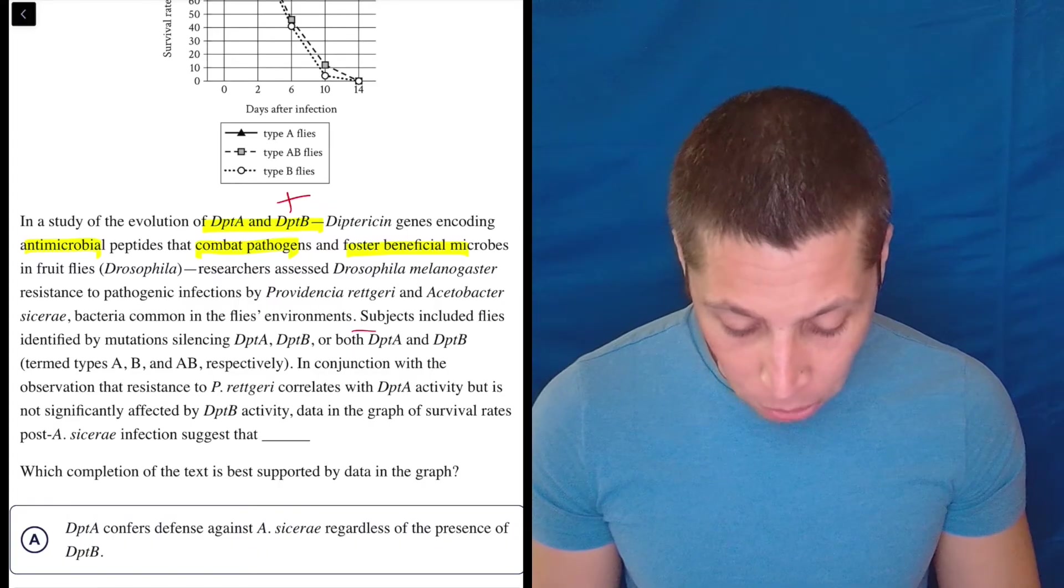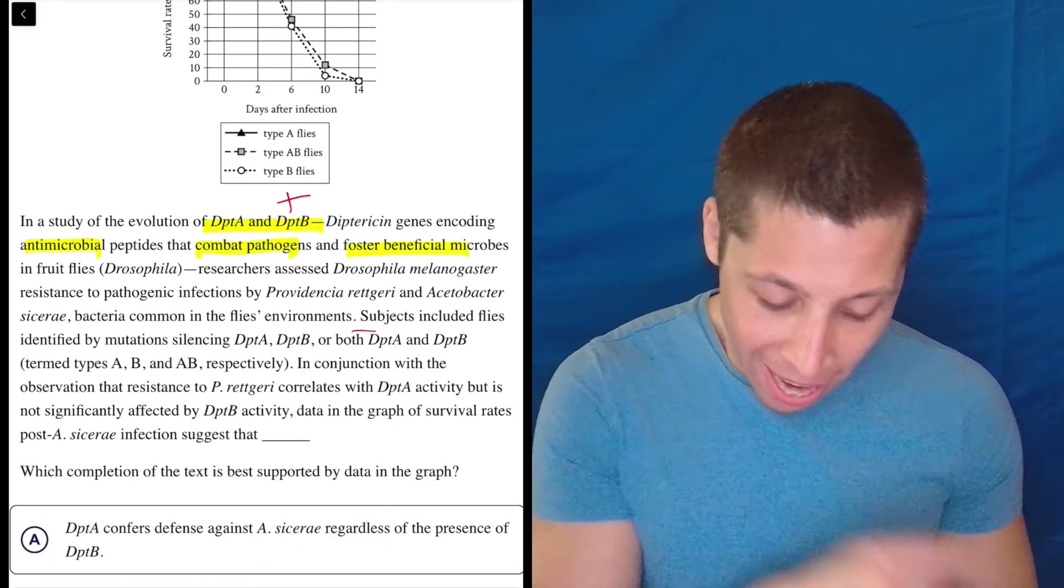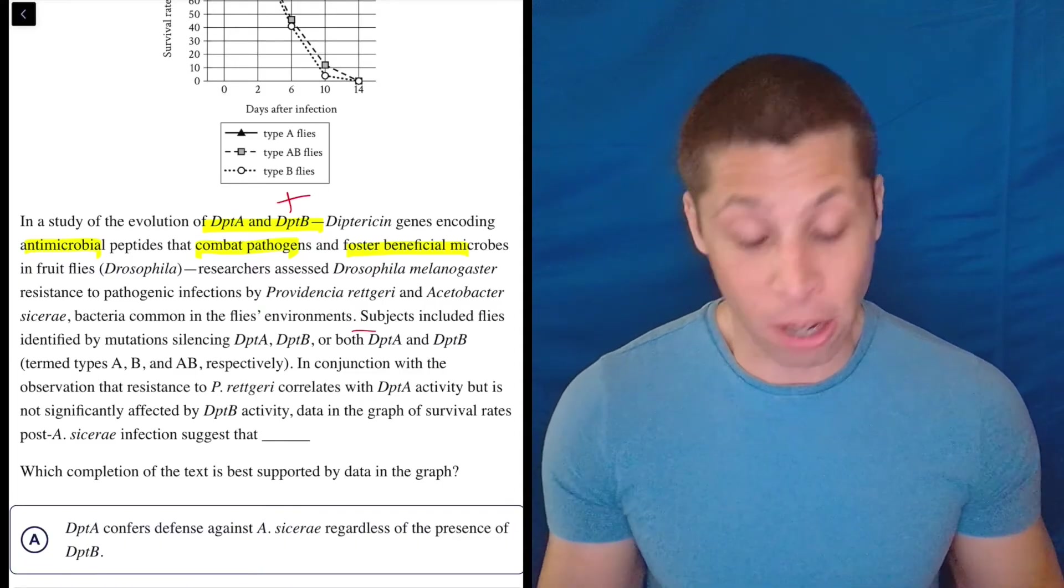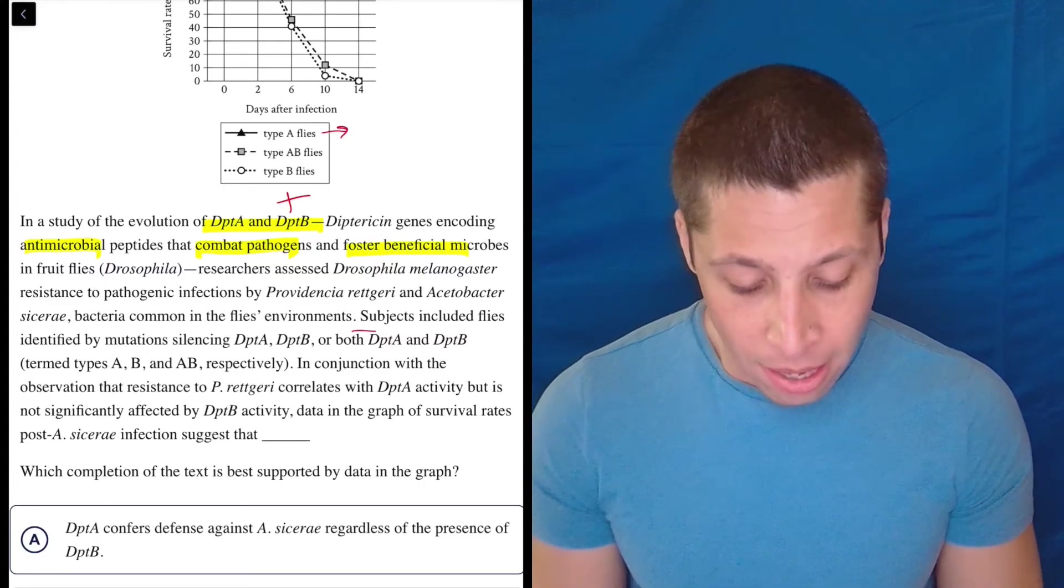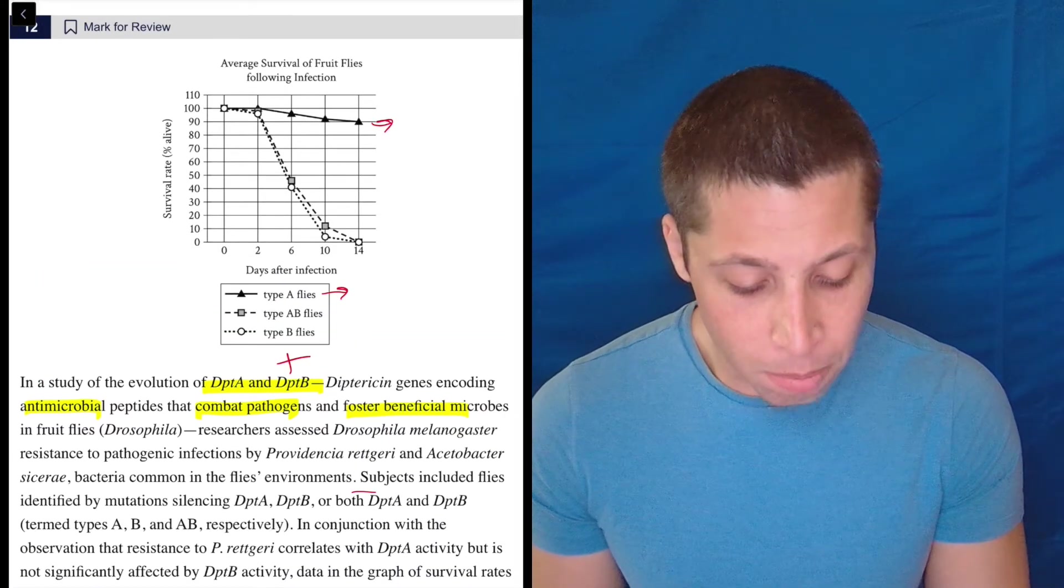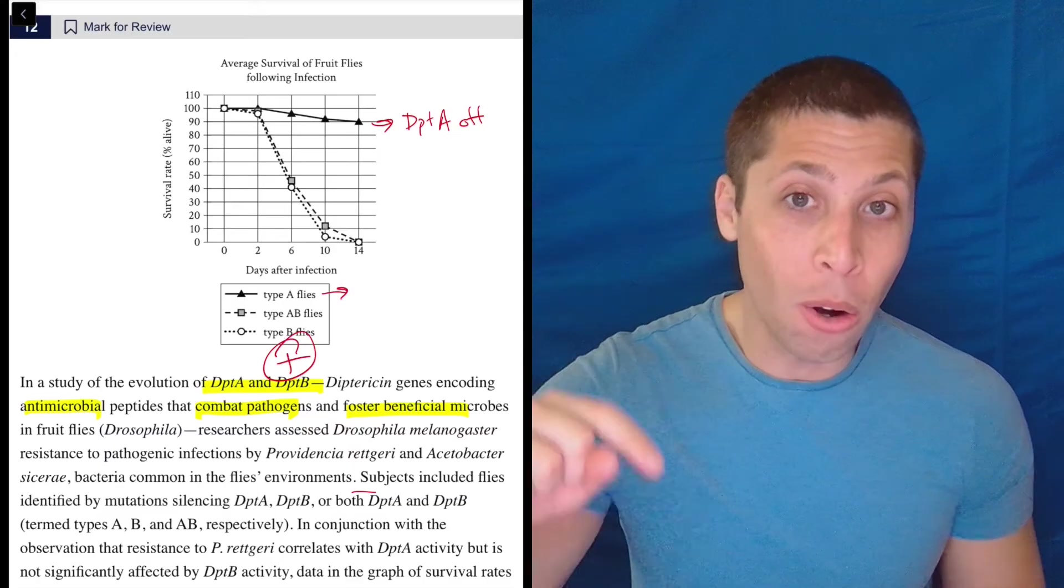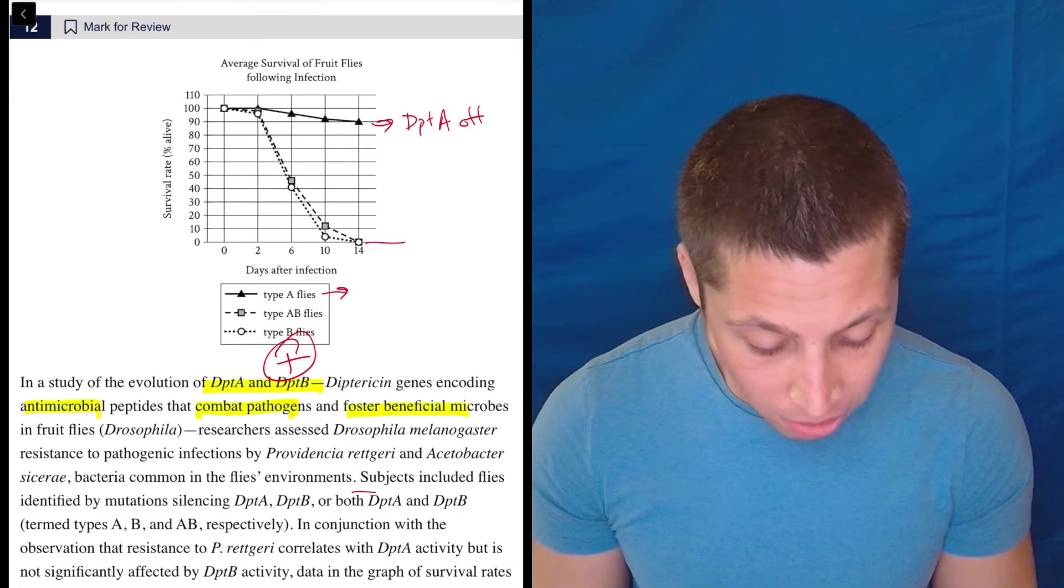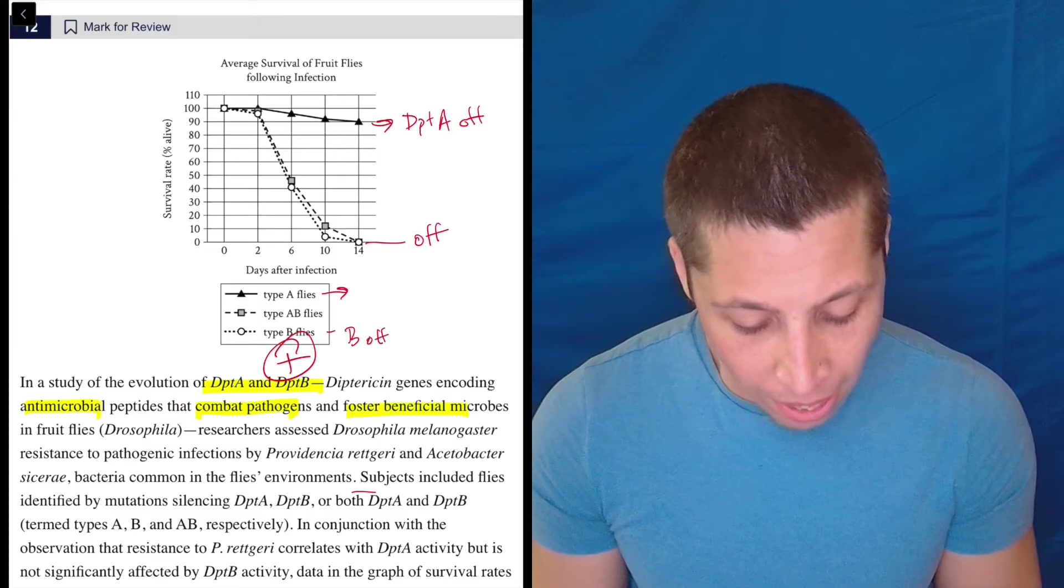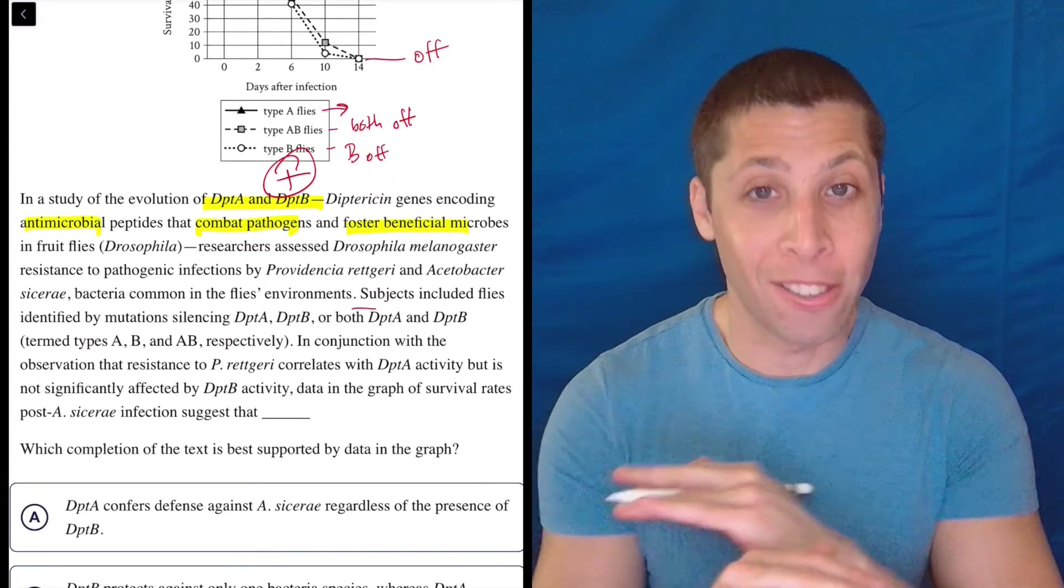Continuing: Subjects included flies identified by mutations silencing DptA, DptB, or both DptA and DptB, termed types A, B, and AB respectively. So right here is a place where I, the first time I read this, wouldn't have really registered what that means. But here's what that sentence is supposed to be saying: when we say type A flies, that's turning off the gene of DptA. So let me put that here on the graph where we're going to need it. So this means the DptA is off, right? So we're turning off a gene that we know is helpful. So when we talk about DptB, these ones here, this is going to be, remember that that gene is off. So in the case of the B flies, B is off. And in the case of the AB flies, both A and B have been silenced, have been turned off. So the good thing is gone.